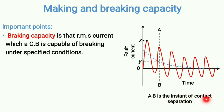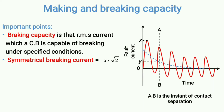AB is the instant of contact separation. Suppose the fault current has been sensed by the relay — the circuit breaker will try to separate the contacts. There are two types of breaking capacity. In the absence of the transient decaying component, the fault current becomes symmetrical. Symmetrical breaking current is X divided by root 2, where X is the maximum value — that is, the RMS value.